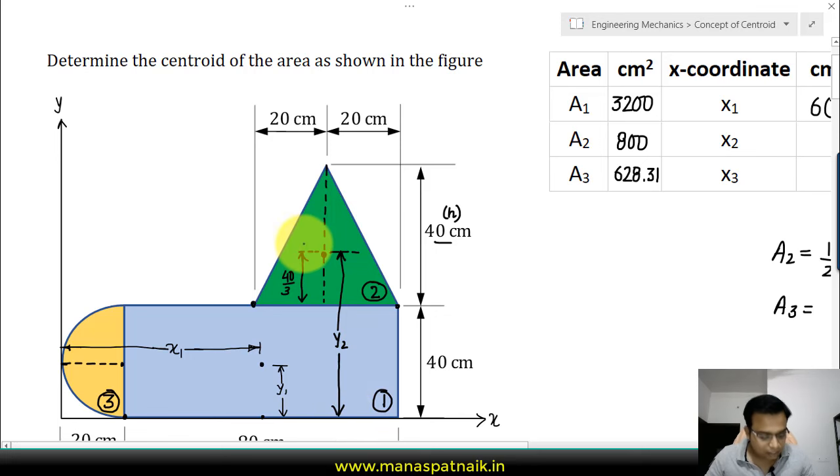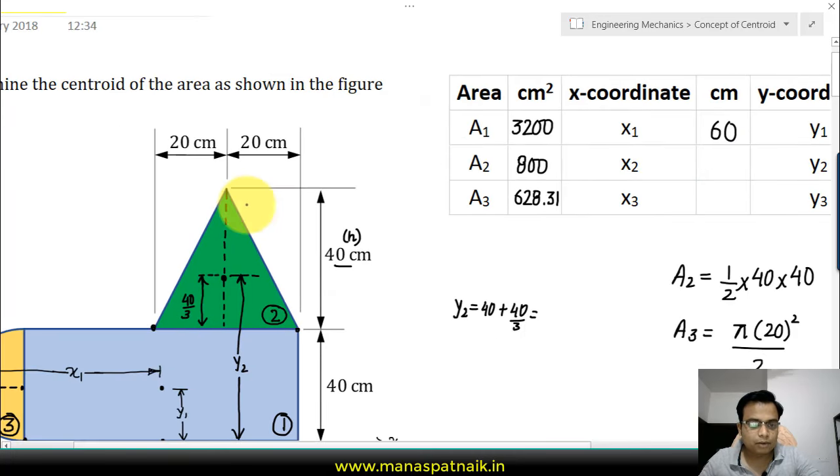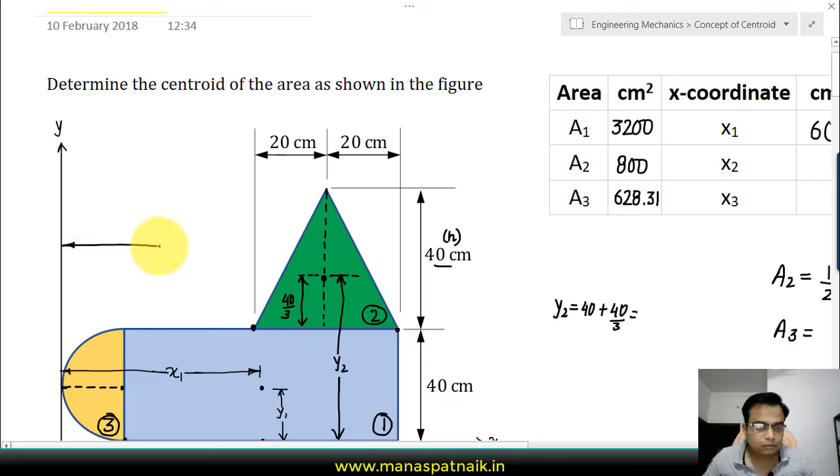What I'm supposed to find is the value of y2, which is precisely this distance. Y2 is equal to from here to here, which is 40, plus 40 by 3. When you do 40 plus 40 by 3, you're going to get 53.33. Now we're interested in calculating the value of x2, the distance of the centroid from the y-axis. From this point to this point, that's 20 plus 40, which is 60, plus again 20 is 80.